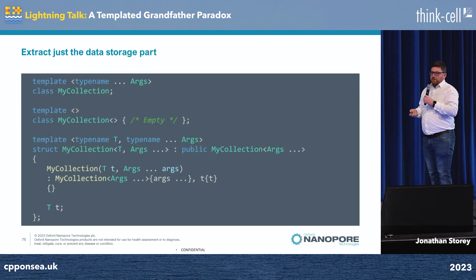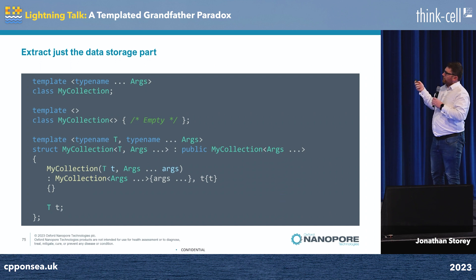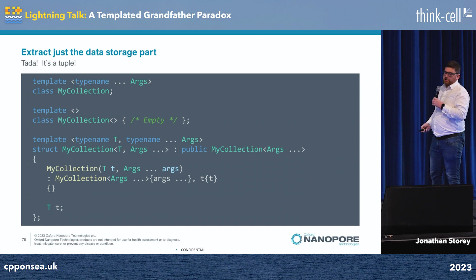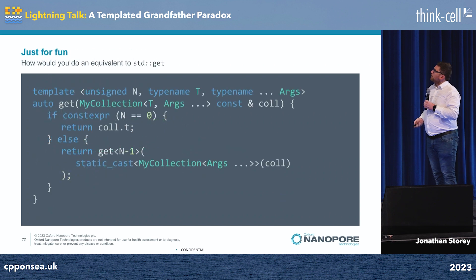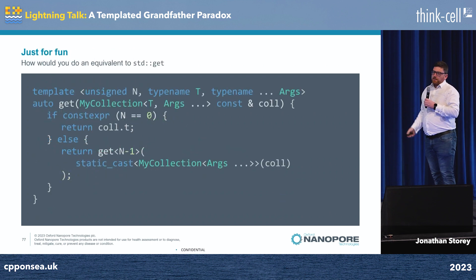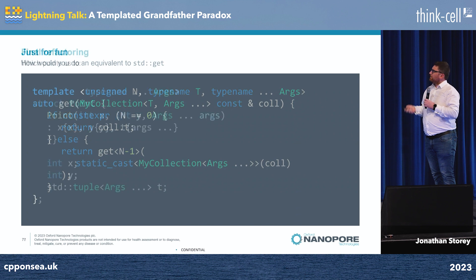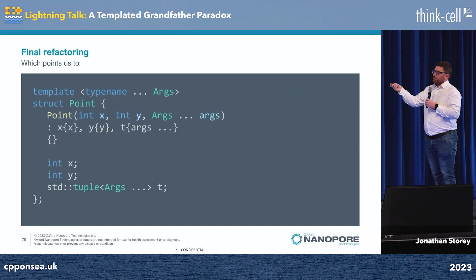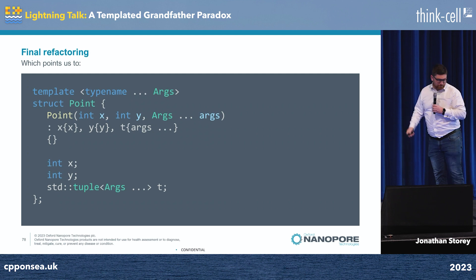So then we want to do some more refactoring. We extract just the data storage part, and before you know what's happening, you've got a tuple. You can do a standard get if you want. But to be honest, if you want to store multiple arguments of arbitrary type, just use a tuple. Thank you.